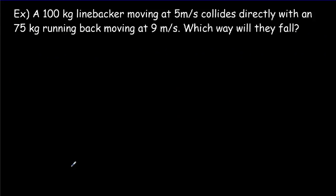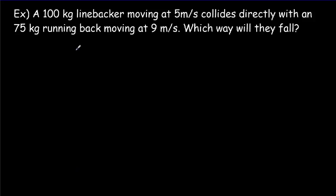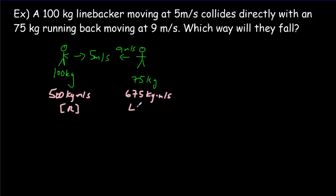So how might we use momentum? We've got a 100 kilogram linebacker running at 5 meters per second, and he's going to collide with a 75 kilogram running back running at 9 meters per second. The linebacker's momentum is mass times speed: 500 kg·m/s to the right. The running back has 75 times 9, which is 675 kg·m/s to the left. There's more momentum to the left, so the running back is harder to stop, and they'll fall in the direction the running back is moving.